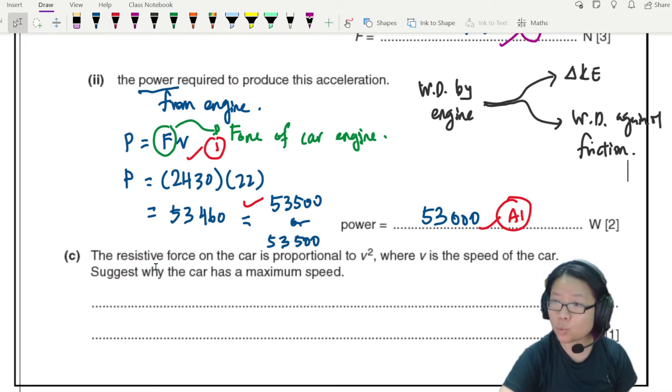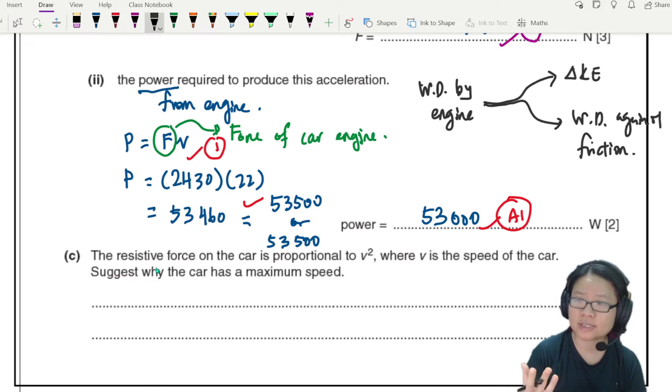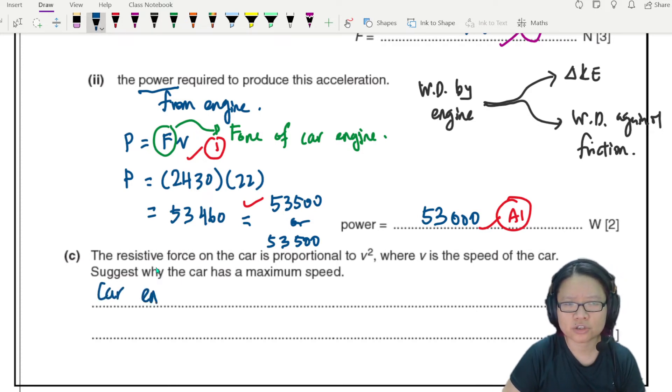Part C: The resistive force on the car is proportional to v squared where v is the speed of the car. Suggest why the car has a maximum speed. Well this is because your car engine has a maximum power, maximum force. Write it down first: car engine, the car itself has a maximum power